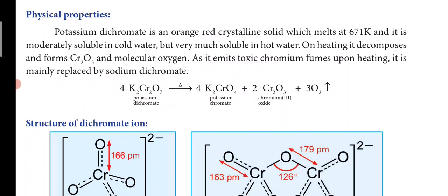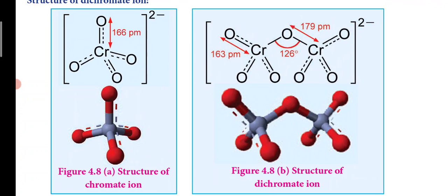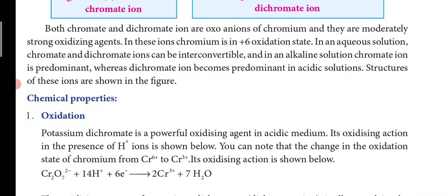The structure of the dichromate ion (Cr₂O₇²⁻) and chromate ion (CrO₄²⁻) are important. Chromate ion has chromium at the center with four oxygen atoms in a tetrahedral structure with a 2− charge. Dichromate ion has two chromium atoms with seven oxygen atoms, with one bridging oxygen in the center, also carrying a 2− charge. Both are oxo anions of chromium with the chromium in the +6 oxidation state.